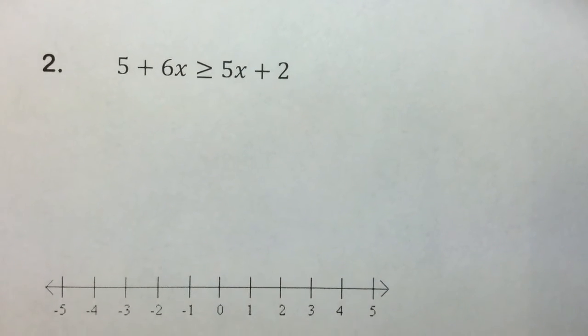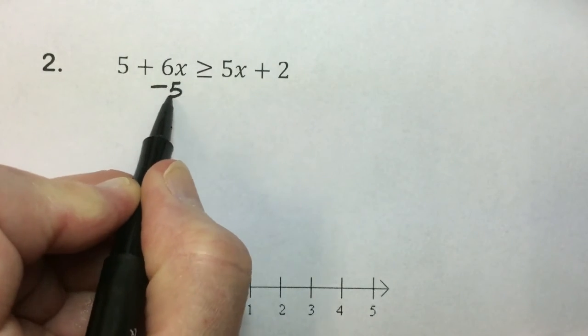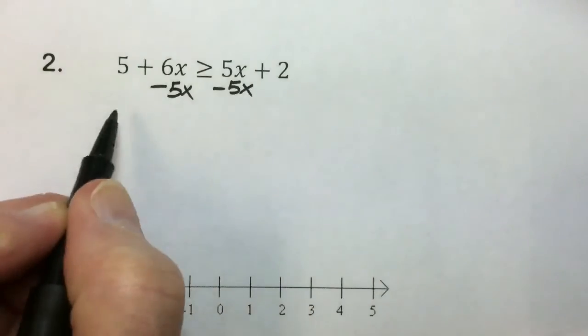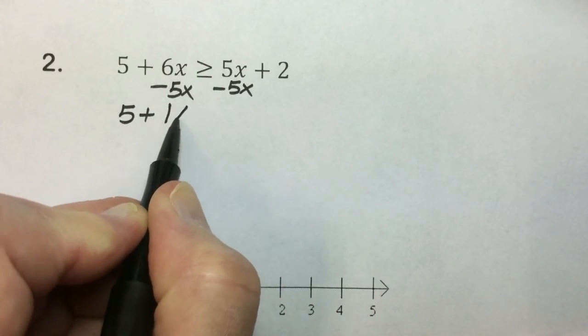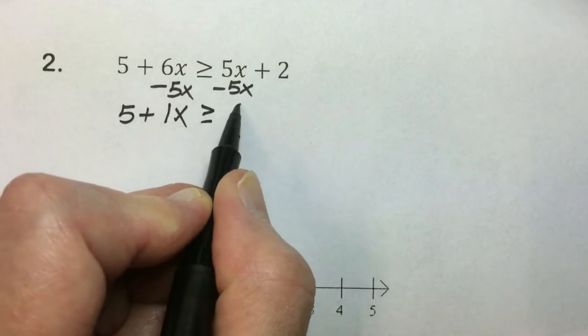In this next inequality, we can follow the equation-solving procedures to solve inequalities. In this problem, we have variables on both sides. One option would be to subtract 5x from both sides. Simplifying leaves us with 5 plus 1x greater than or equal to 2.